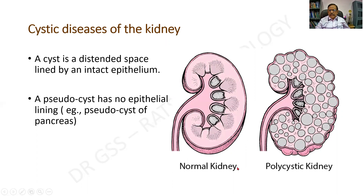In this picture we shall be seeing the normal kidney with the corticomedullary differentiation, the calyces, the ureter and the renal pelvis. Whereas in this one I am finding multiple spherical bubble-like structures throughout the parenchyma, and externally I can see an uneven surface. So this is the case of a polycystic kidney.